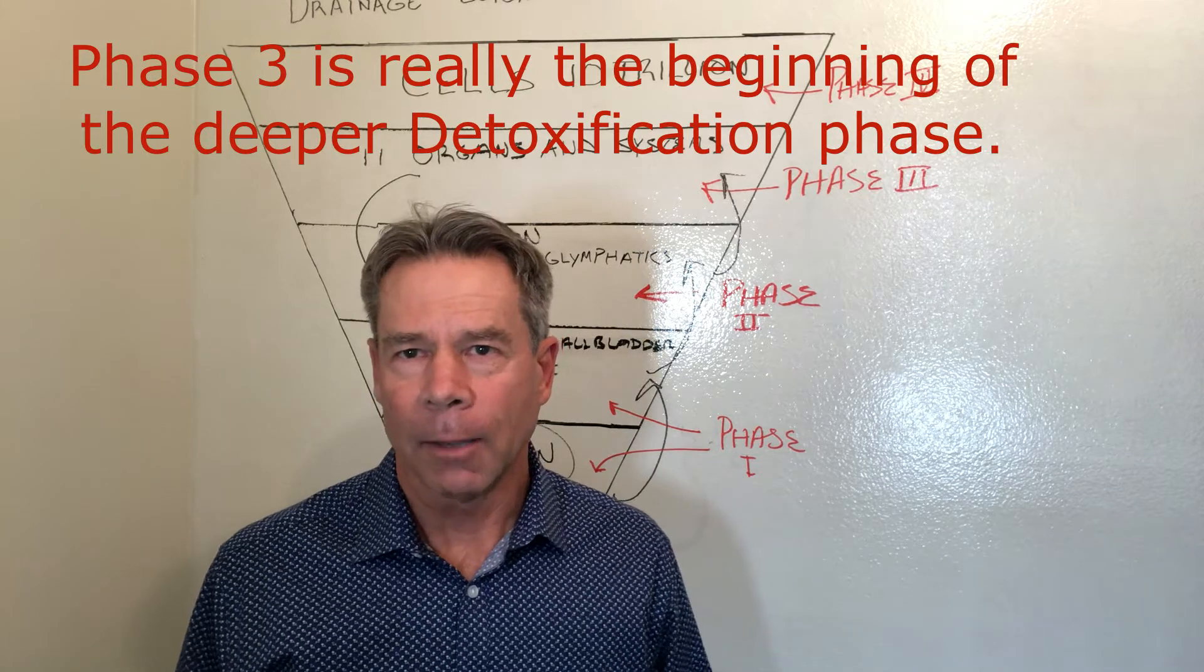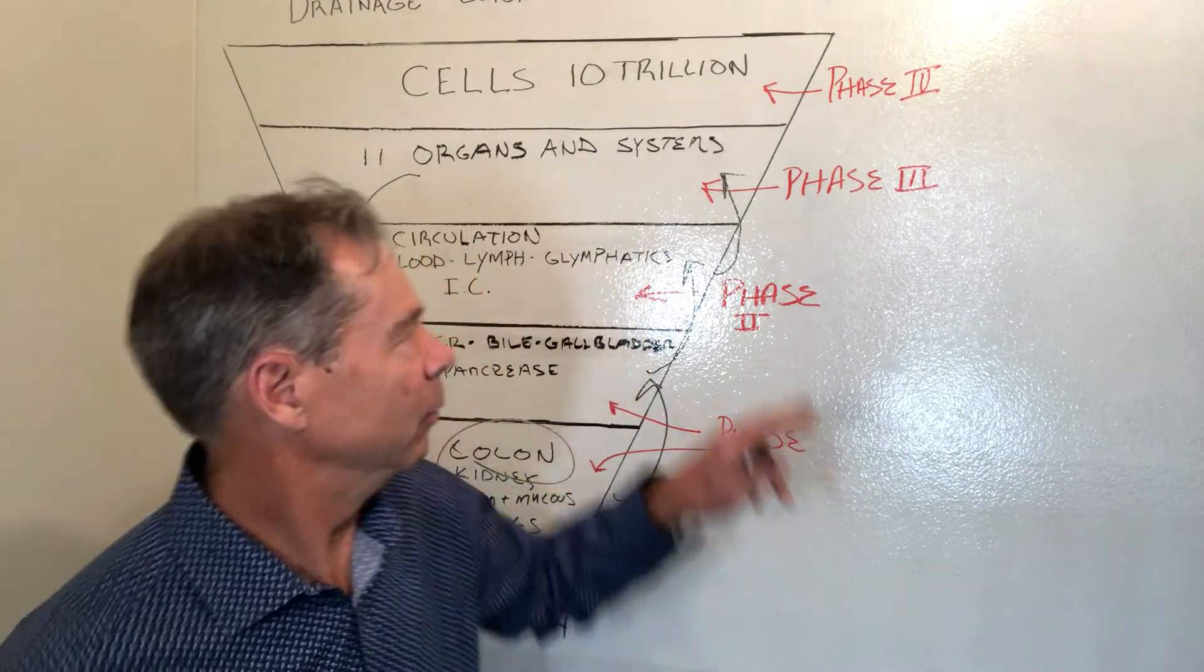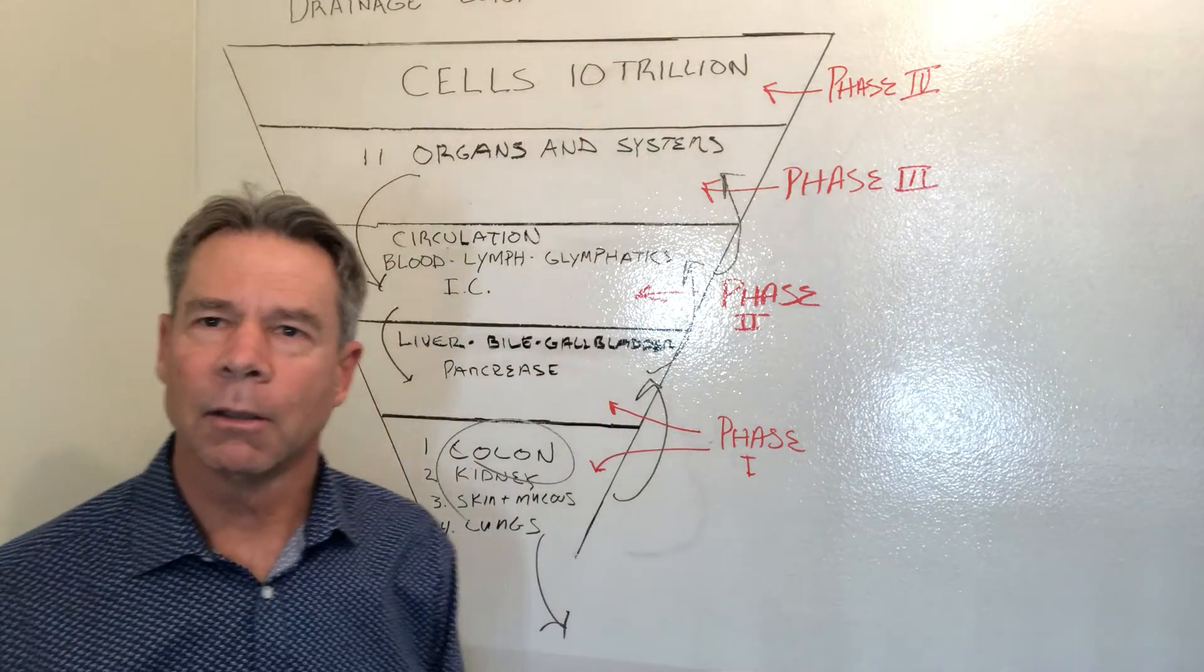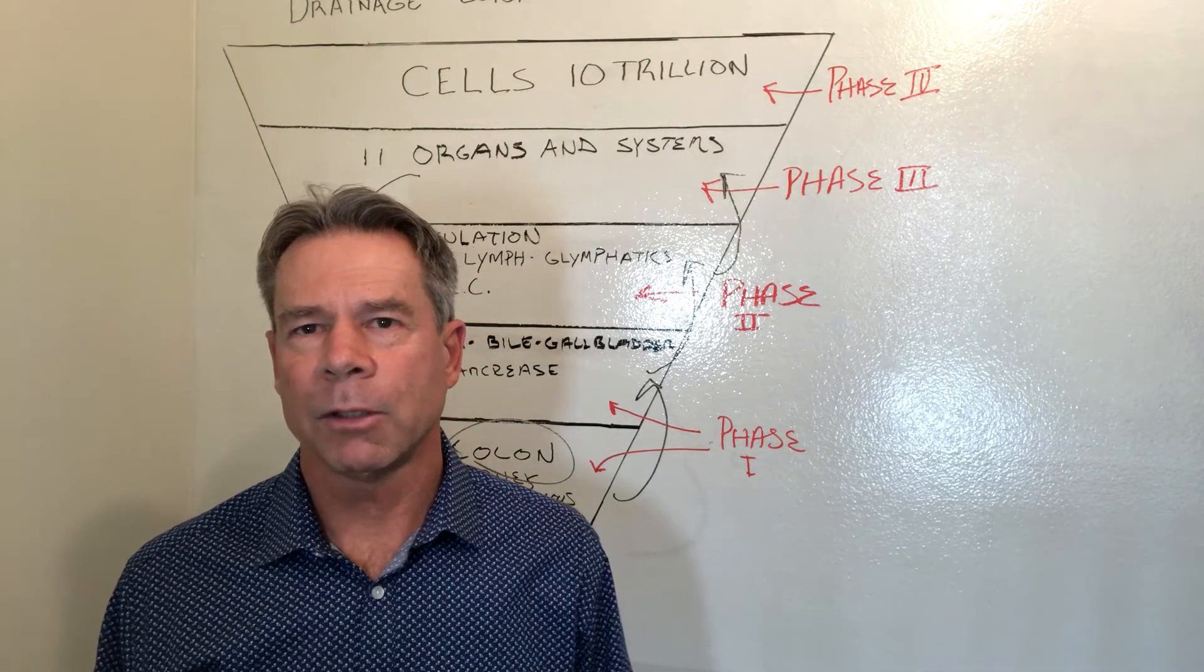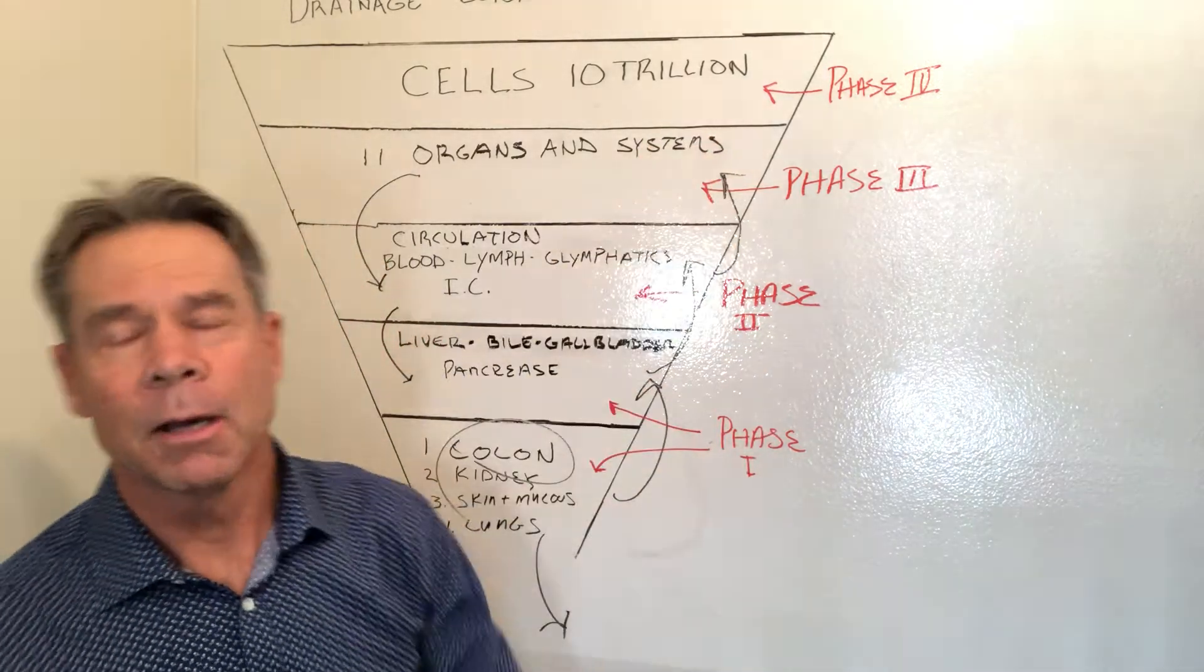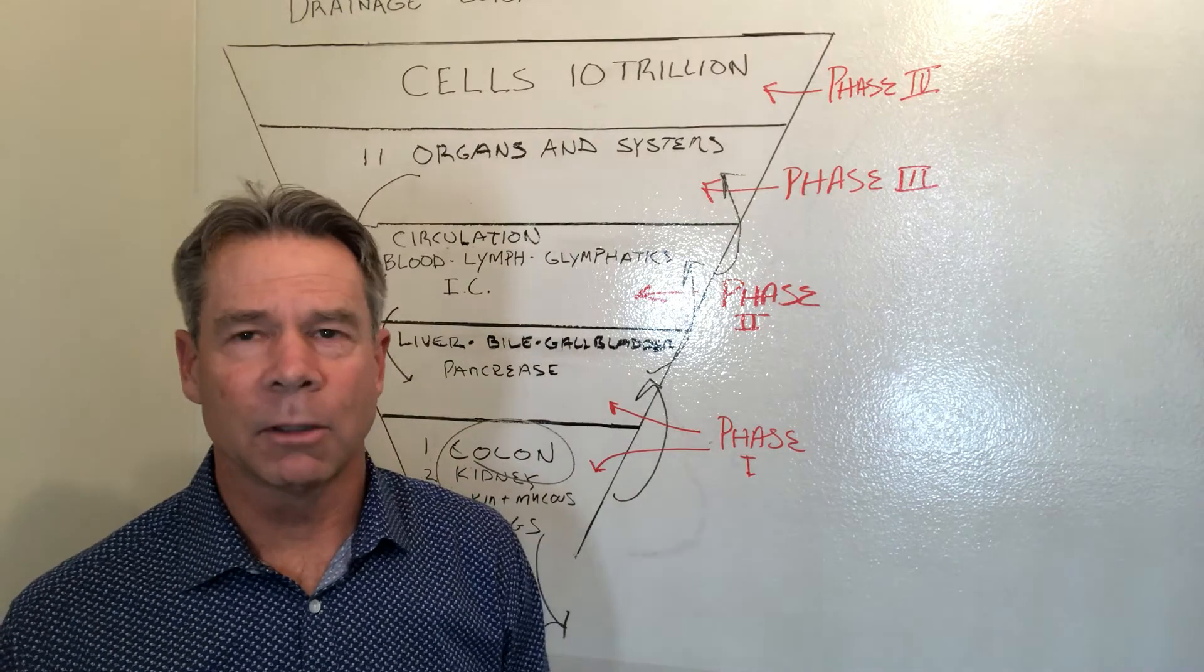And I believe that this phase is where most people start. And when they start doing this first without the preparation, then the toxins will become recirculated back into the body. So phase three is an essential phase to get to phase four, which is at the top of the funnel, where all the toxins are doing their damage to you.